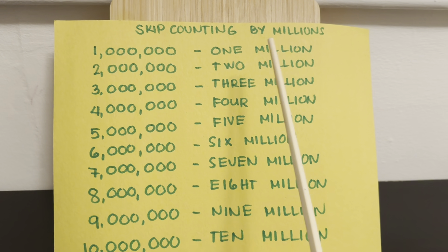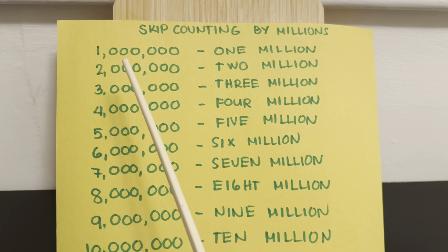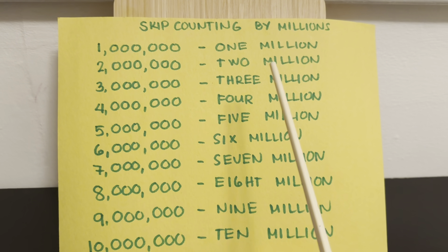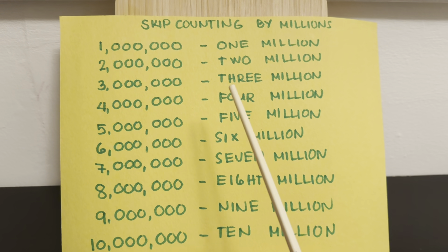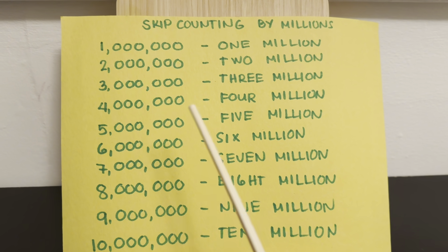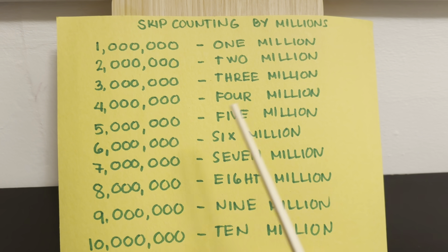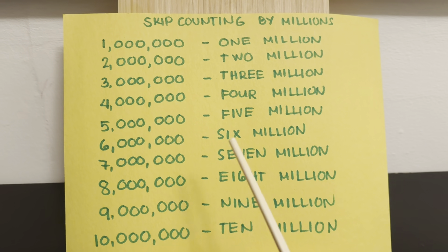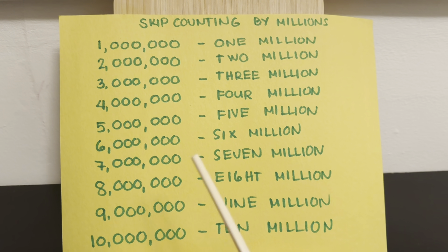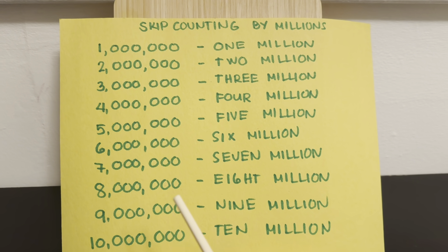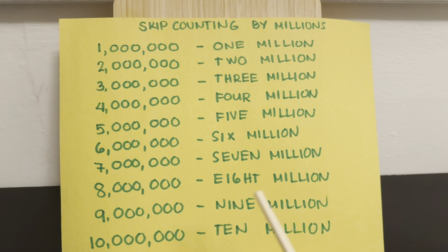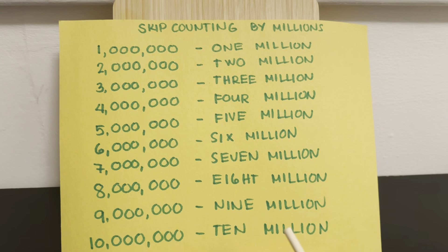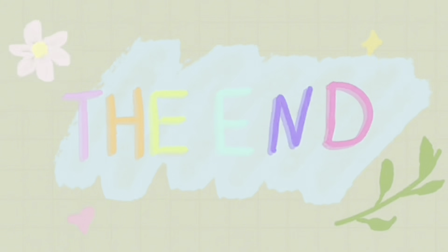And lastly, skip counting by millions. 1,000,000, 2,000,000, 3,000,000, 4,000,000, 5,000,000, 6,000,000, 7 million, 8 million, 9 million, 10 million. The End.